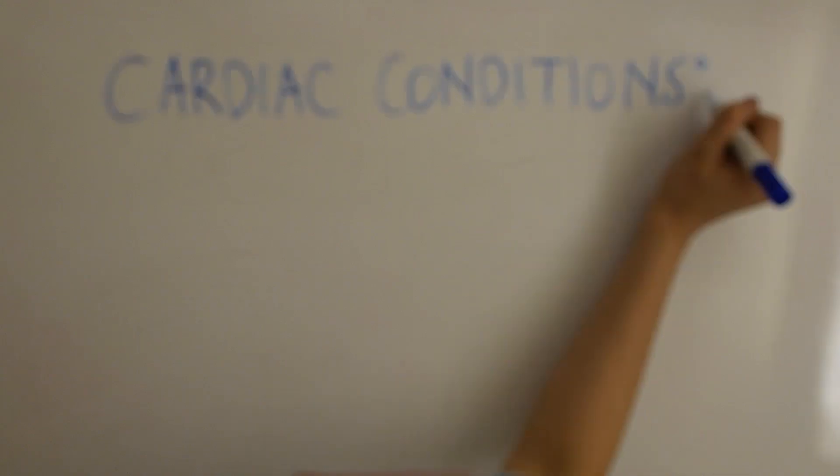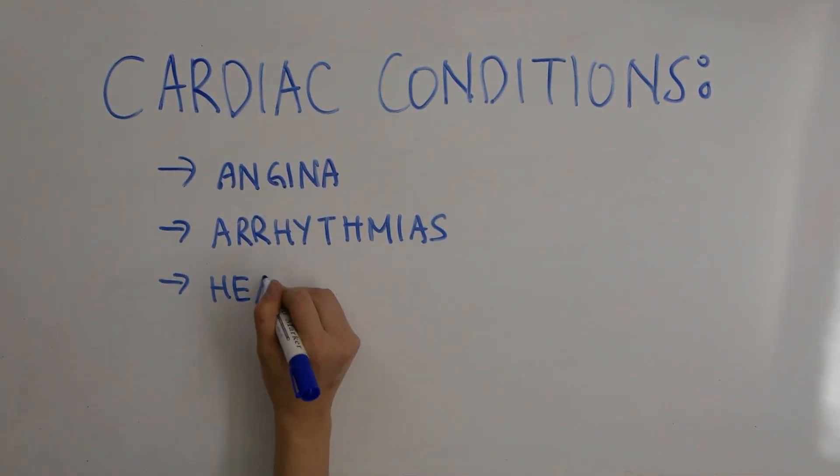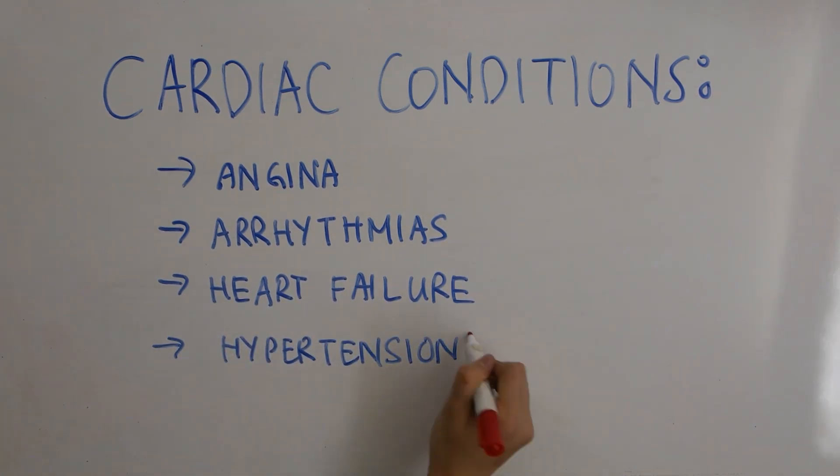Beta blockers are used in a variety of cardiac conditions including angina, arrhythmias, and stable heart failure. Today we will be focusing on the use of these drugs in the management of hypertension. A beta blocker is a drug that